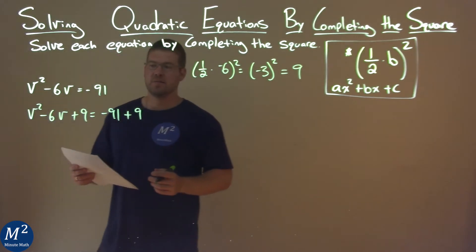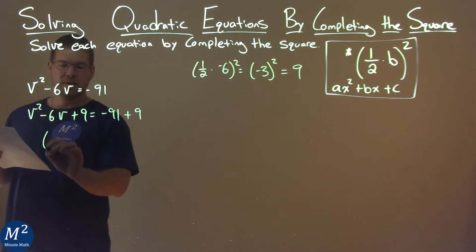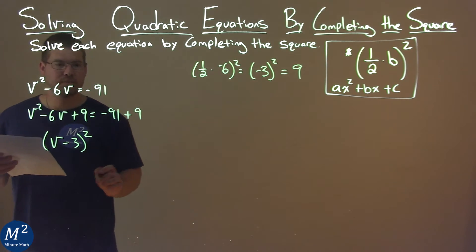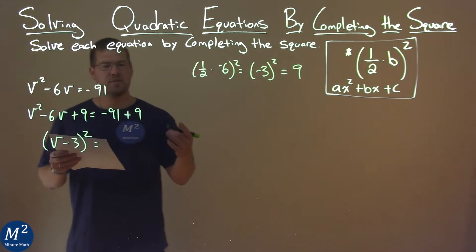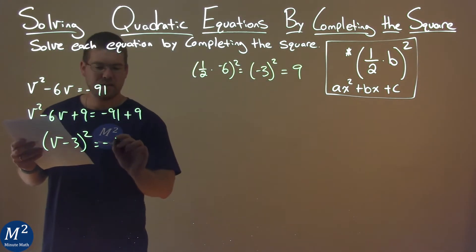Now the left hand side is now a perfect square. It becomes v minus 3 all squared and that's equal to negative 91 plus 9, which is negative 82.